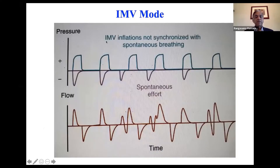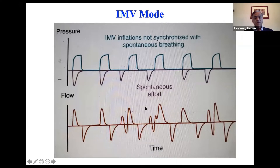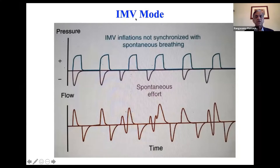Here is a baby with IMV breath. This is a ventilator-delivered breath, and this is the baby taking a spontaneous breath. Here is another spontaneous breath where the ventilator is not delivering. It's all over the place — ventilator-delivered breath, ventilator-delivered breath, spontaneous breath, and then before the spontaneous breath ended, the ventilator started. You see a lot of asynchronous breathing in regular IMV mode.